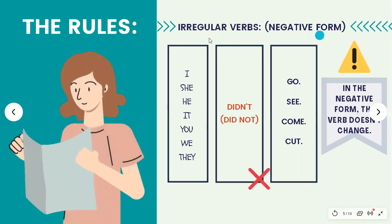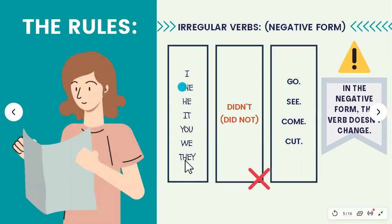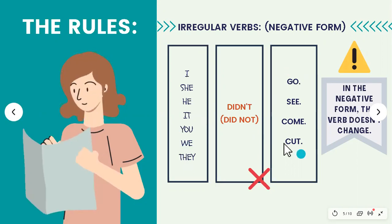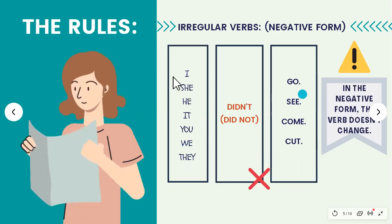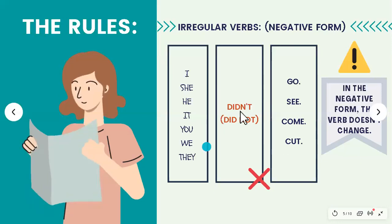Acá tenemos la forma negativa. ¿Y qué pasa en la forma negativa? Tenemos primero el sujeto — cualquier sujeto: I, she, you, we. Then I have 'didn't', and then I have the verb. Y si se dan cuenta, en la forma negativa, tal como pasaba con los verbos regulares, el verbo no cambia. Entonces: I didn't go — yo no fui. She didn't see — ella no vio. It didn't come — él no vino. We didn't cut — nosotros no cortamos.